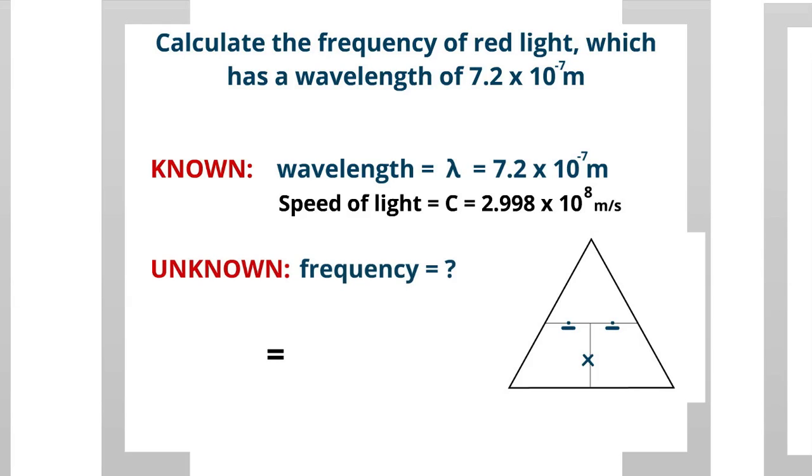So, frequency equals, in order to figure out what we do, we cover up the frequency, and then the triangle reveals to us what we have to do. So, frequency is going to be equal to the speed of light divided by the wavelength.